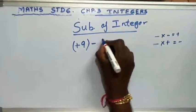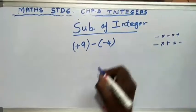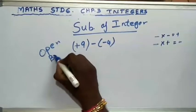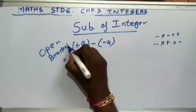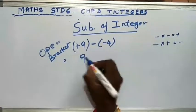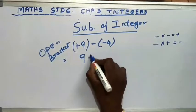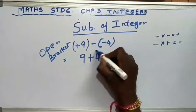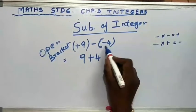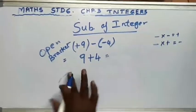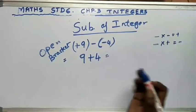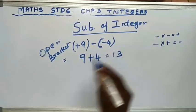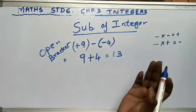Let me write another example: plus 9 minus (minus 4). Opening the bracket: minus into minus is plus, so this becomes 9 plus 4. Both sides positive, so you add. 9 plus 4 is 13. The greater number is 9 and 9 has a positive sign, so the answer is plus 13.